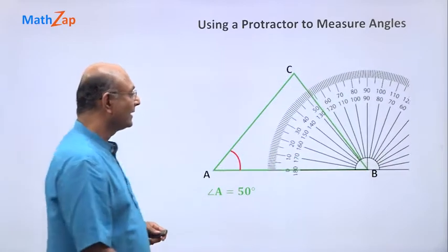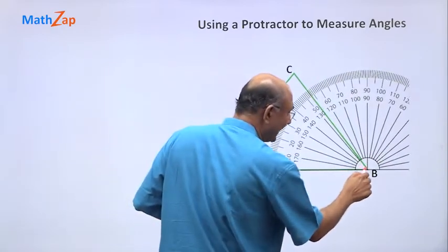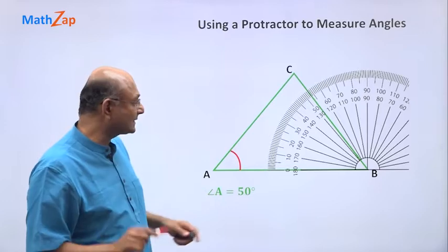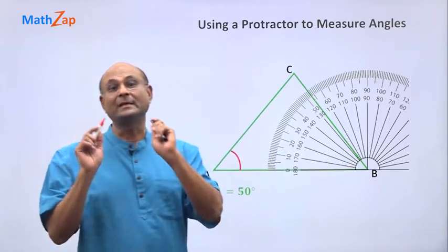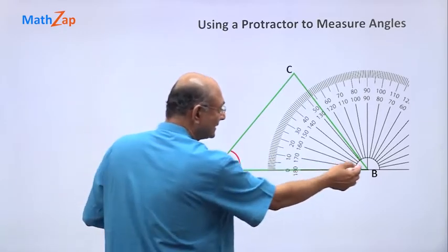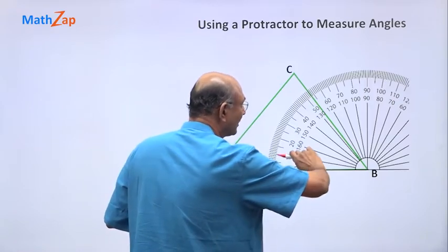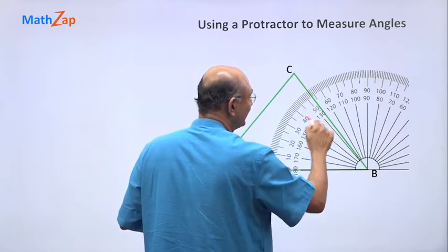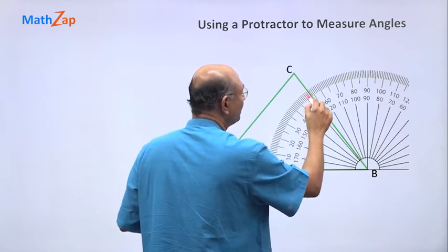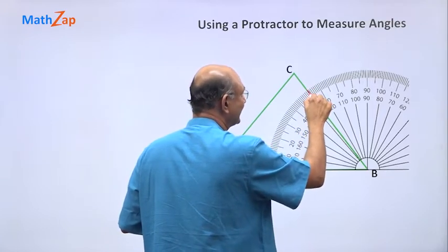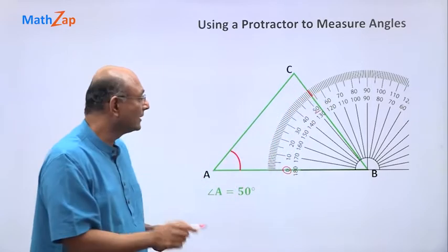Now if I move the protractor that way, then B is now matching with the vertex. Vertex B is matching with the center of the protractor and this is the baseline. So we're going to start counting from zero and we count like this. So as we count like this we reach 50, 51, 52, this line here, that is 53. So angle B is 53 degrees.